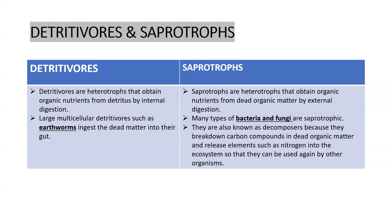Though both are heterotrophs and they feed on the dead, the main difference is that detritivores obtain organic nutrients by internal digestion. They eat, and then inside their body they do the digestion. An example is the earthworm.